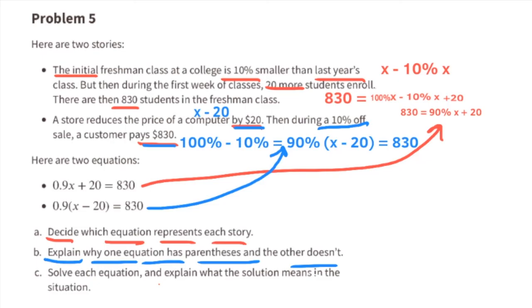Part b: Explain why one equation has parentheses and the other doesn't. In the second story, the store reduced the price of the computer by $20. They did that first. Then they had a 10% off sale, which means they were going to charge 90% of the value of the computer after they reduced the price by $20. They represented this in the equation using parentheses, x minus 20. And that was a little different compared to the first story. In the first story, they took 90% of last year's class, and then they added 20 students. They didn't need parentheses to separate this.